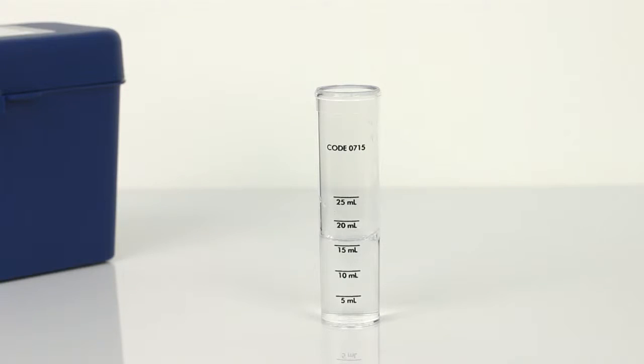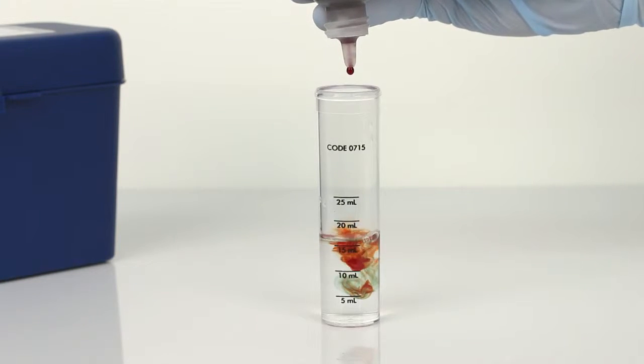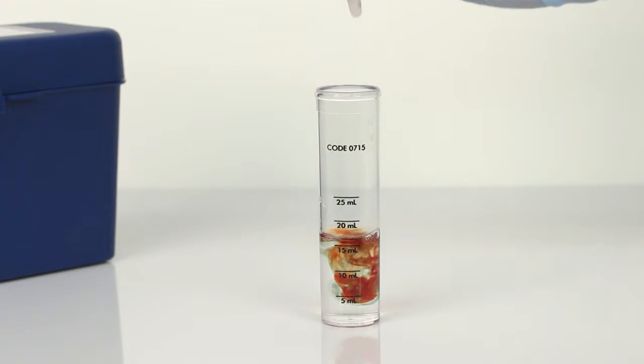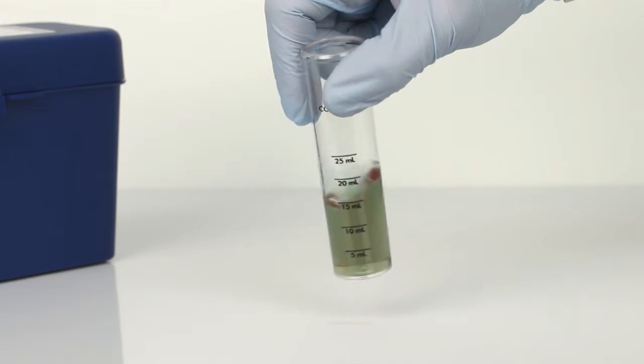Next, add five drops of QAC indicator solution. The bottle contains a dropper tip, so it's important to hold the bottle vertically to get a consistent drop size. Swirl the vial to mix the reagents. The solution will turn green.